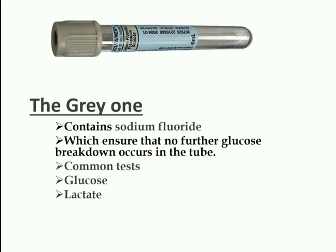Next we have the gray tube. It contains sodium fluoride as an anticoagulant, which ensures that no further glucose breakdown occurs in the tube. Common tests include fasting, random, or postprandial glucose, as well as GCT, GTT, and lactate tests.